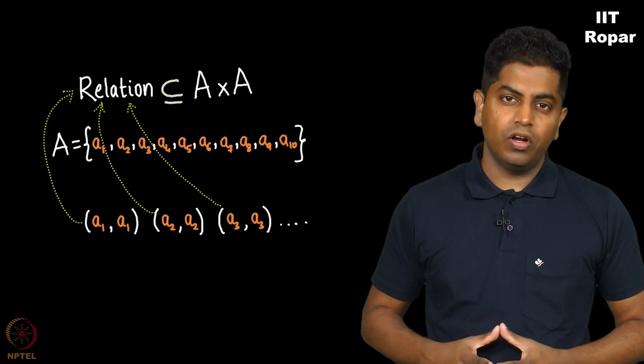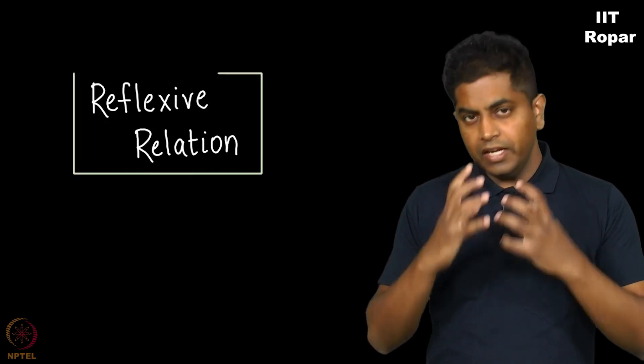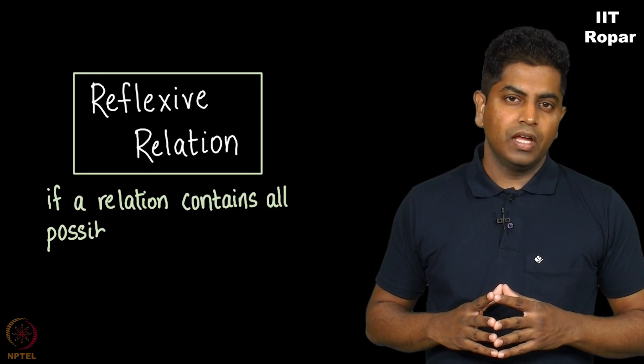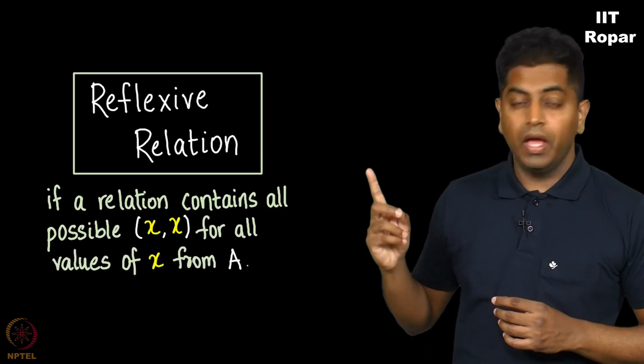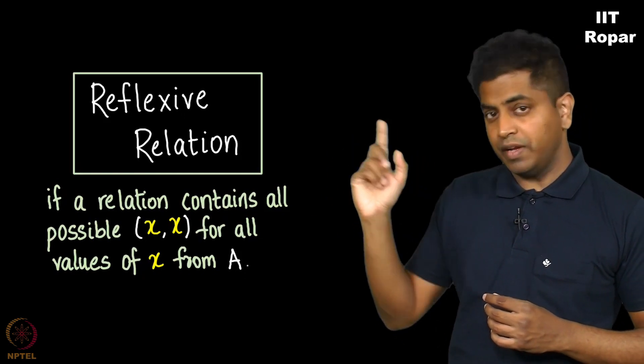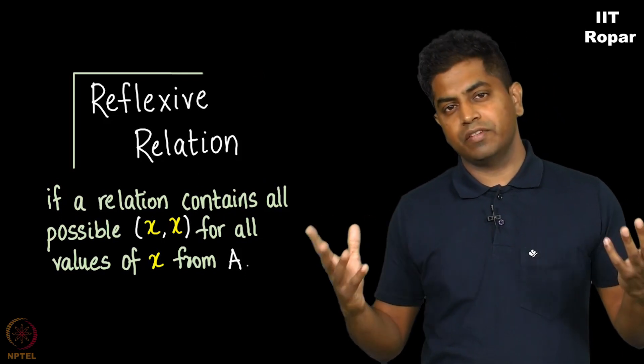Such a relation is called a reflexive relation. To summarize, a relation is a subset of A cross A. If it contains all possible elements of the form X, X for all values of X from the set A, we call such a relation a reflexive relation.